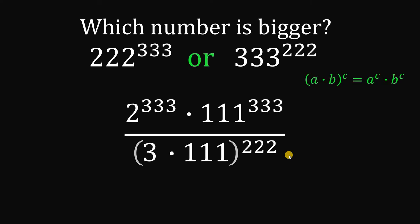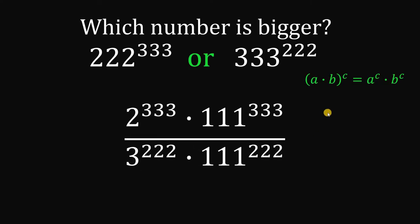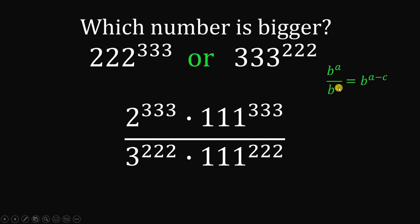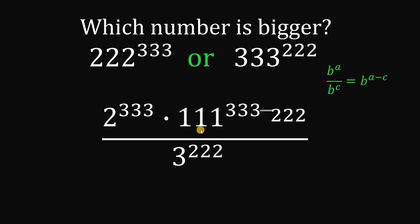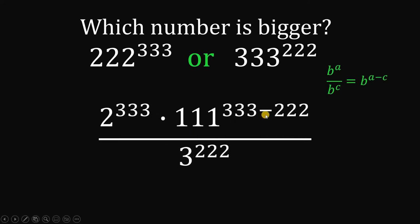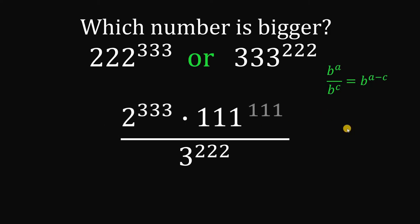On the denominator, we will do the same thing. Now, take note that when we have the same base — b^a over b^c — this can be written as b raised to (a minus c). We apply this to 111 raised to 333 over 111 raised to 222, which simplifies to 111 raised to (333 minus 222), and 333 minus 222 is just 111.